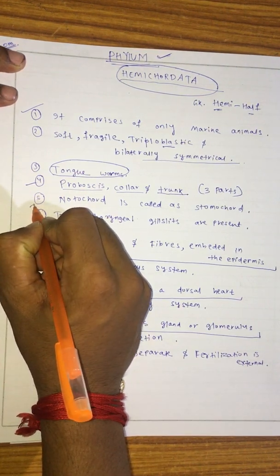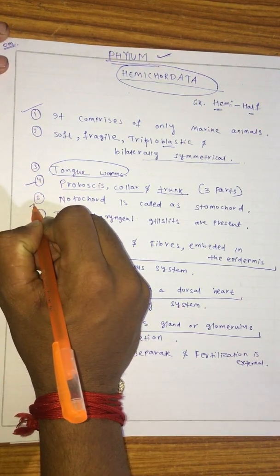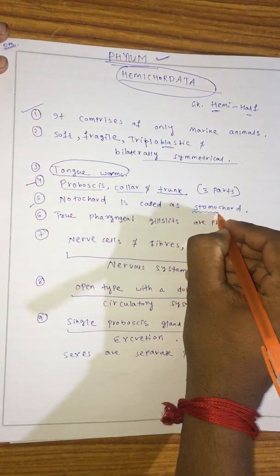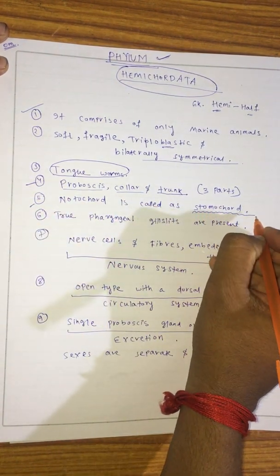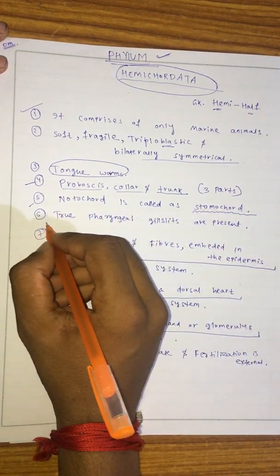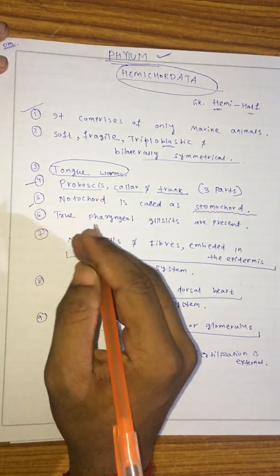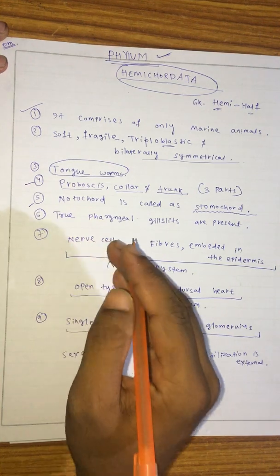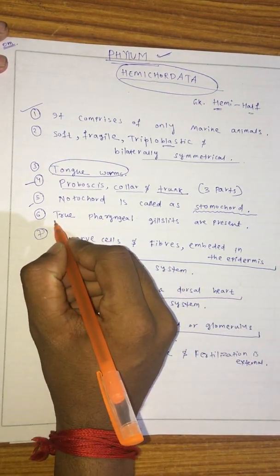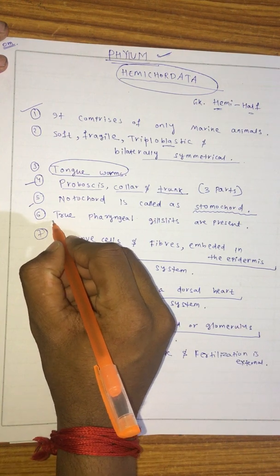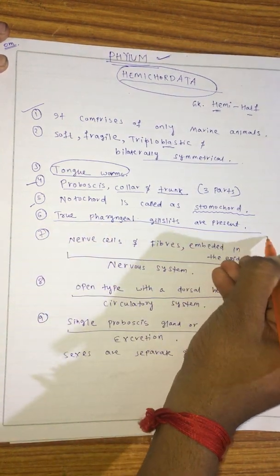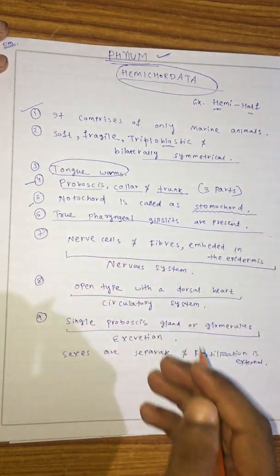The notochord is called the stomochord. The true pharyngeal gill slits are present in the case of Phylum Hemichordata.